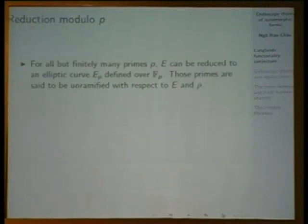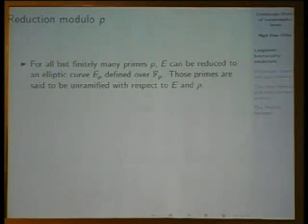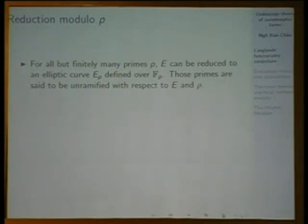For all but finitely many primes p, E can be reduced to an elliptic curve E_p defined over F_p. By reduction, I mean you just reduce the equation modulo p, where it is possible. When the reduction is an elliptic curve, we say the prime p is unramified with respect to E, or with respect to the l-adic representation rho.